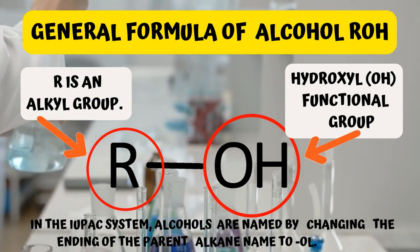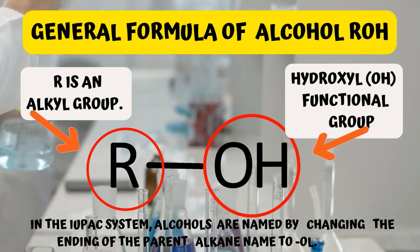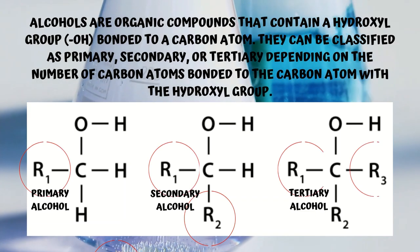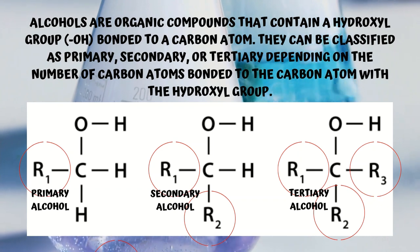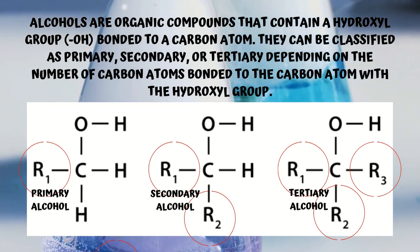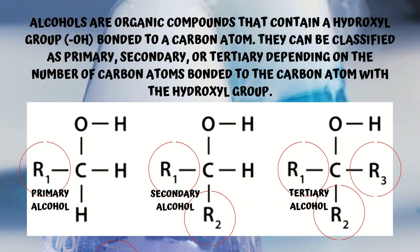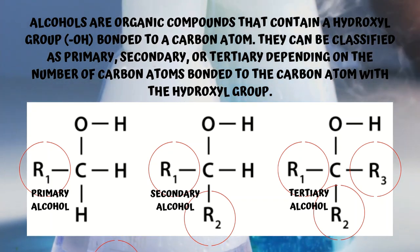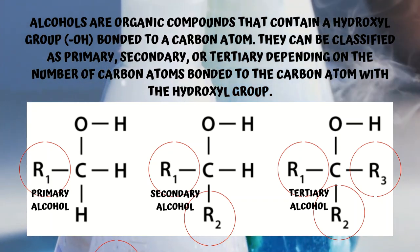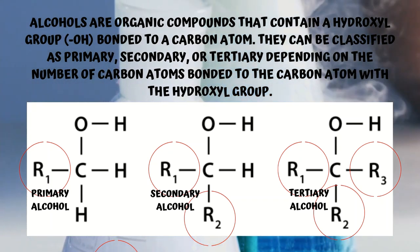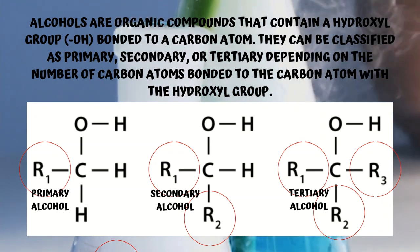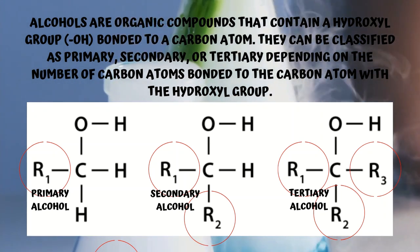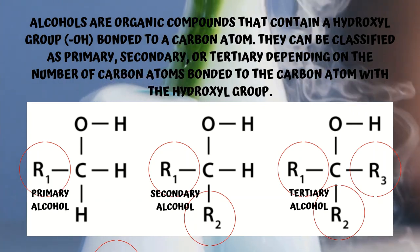In the IUPAC system, alcohols are named by changing the ending of the parent alkane name to -ol. Alcohols are classified according to the number of carbon atoms attached to the carbon atom that is attached to the OH group. Alcohols are organic compounds that contain a hydroxyl group, OH, bonded to a carbon atom. They can be classified as primary, secondary, or tertiary depending on the number of carbon atoms bonded to the carbon atom with the hydroxyl group.